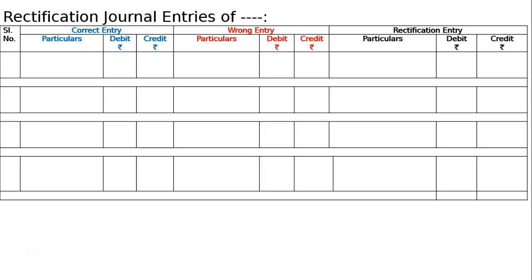The question is: give the rectifying entries of the following. Hence, what should be the correct entry, what was the wrong entry, how it went wrong, how to pass an extraordinary entry which will rectify and nullify the effect of the wrong entry and bring down the correct entry.